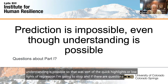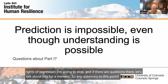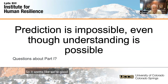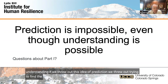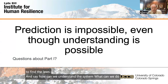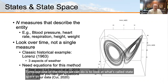So that was the quick highlights — or lowlights — of regression. Any questions to this point? Okay, so what can we do instead to promote understanding? If we throw out prediction, if we throw out trying to find the laws, and instead ask how can we understand the system, what can we do instead? It turns out one thing we can do is look at what's called state space.